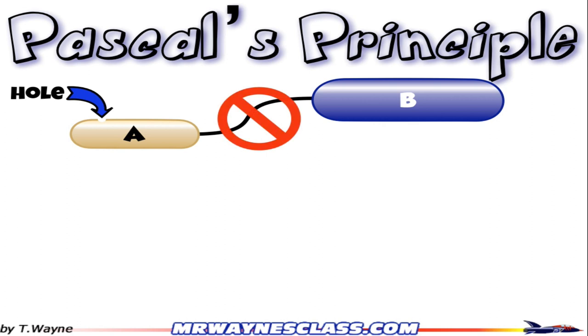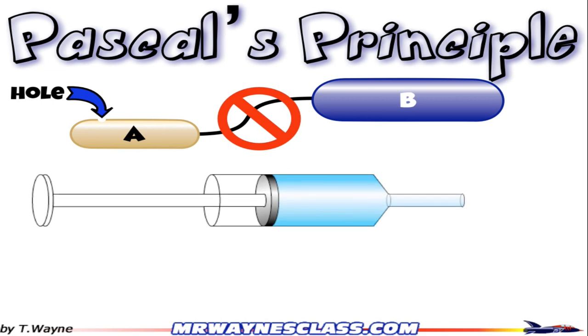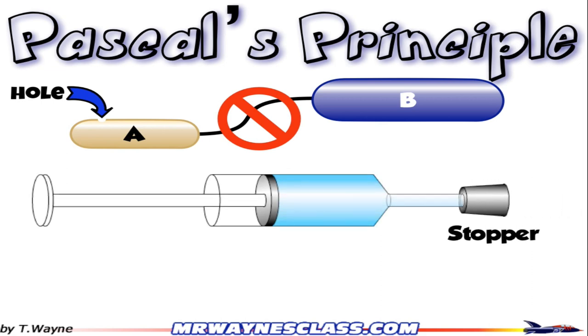Let's give another example — how about a syringe? With the syringe, what I need to do is seal it. So I'll put a stopper on one end of it.